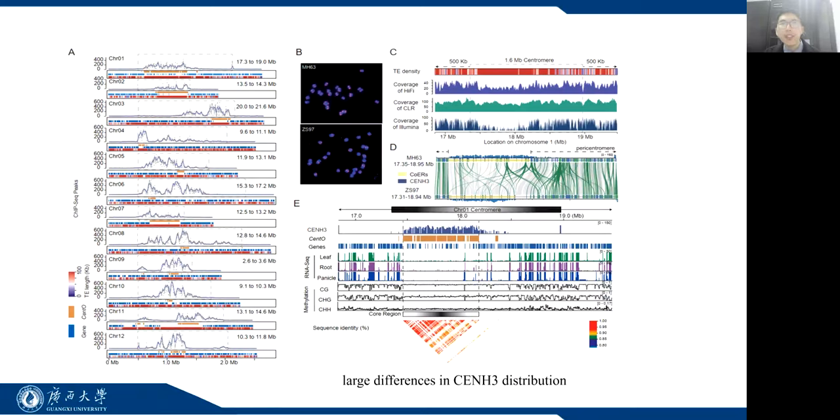We determined that the size of centromeres differs across chromosomes in rice, ranging from 0.6 Mbps to 1.8 Mbps. There is also a variable and uneven distribution of CentH3 density, with some centromeres having CentH3 associations almost entirely on CentO repeats, for example, Minghui Cent1 and Cent2.